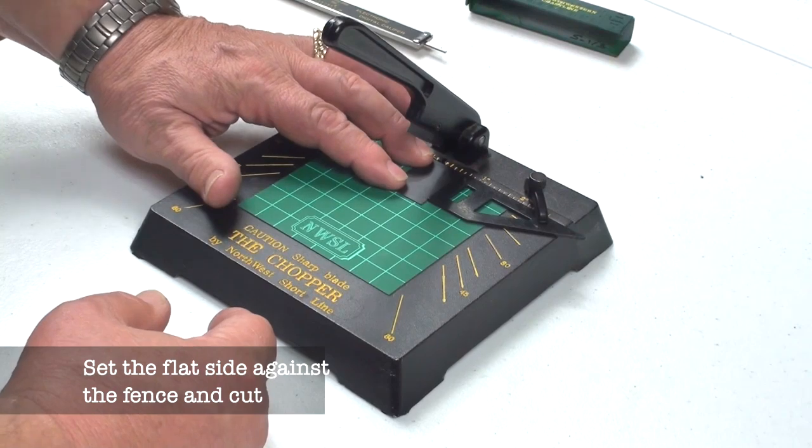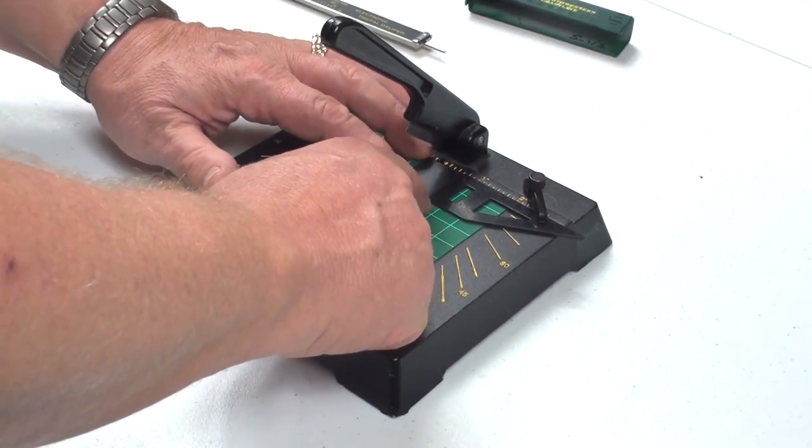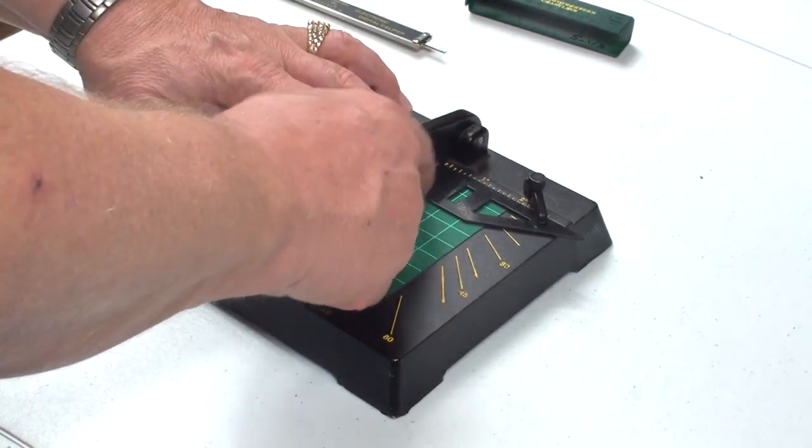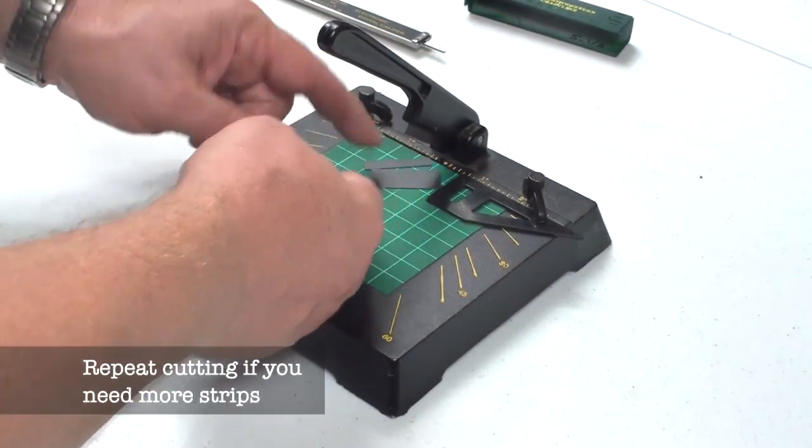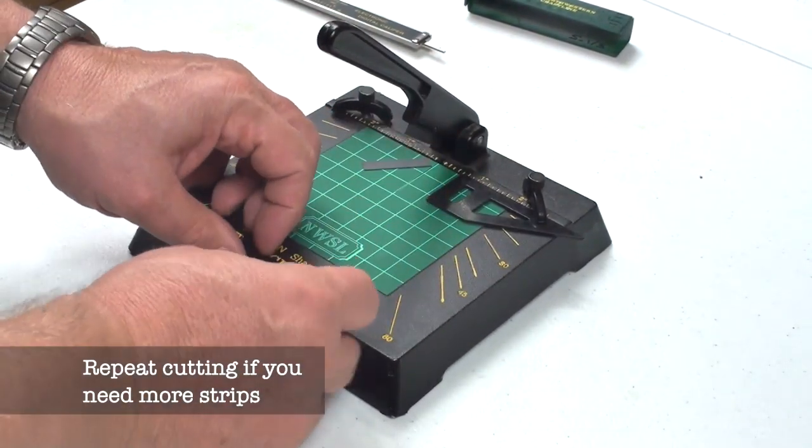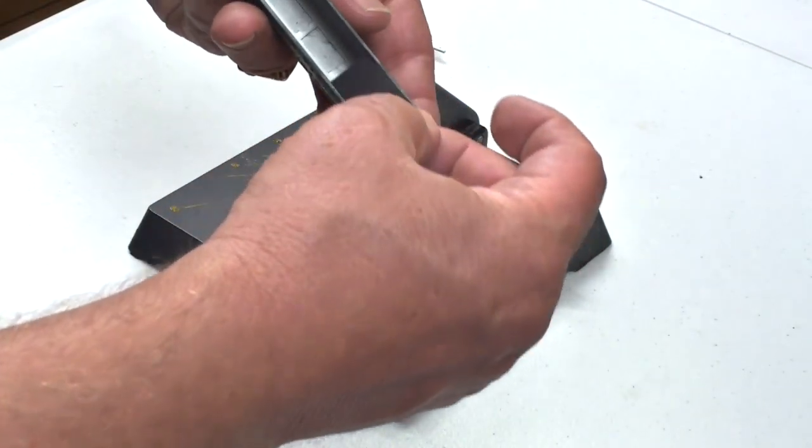I'm going to take the square edge of the piece, put it up against the fence and cut it. Now I have a piece that's about an inch and three-eighths long and the proper width for the shell.